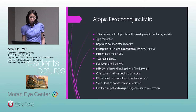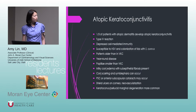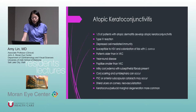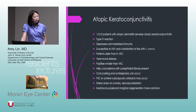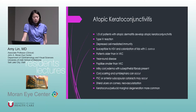Atopic keratoconjunctivitis occurs in one-third of patients with atopic dermatitis. This is a type 4 reaction with depressed cell-mediated immunity, making patients susceptible to HSV and staph lid colonization. Patients are typically older than those with vernal keratoconjunctivitis. It is year-round. Papillae are smaller than in vernal. There's a milky conjunctival edema look with sub-epithelial fibrosis, and they can get conjunctival scarring and symblepharon.